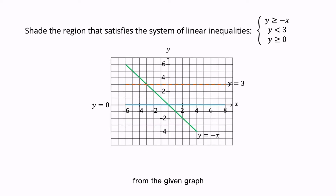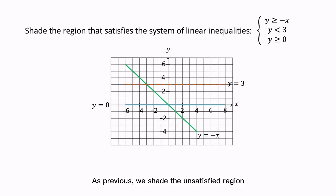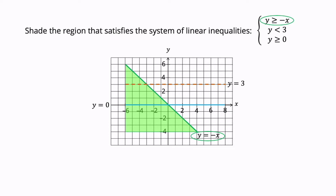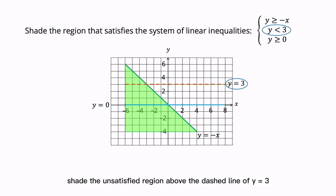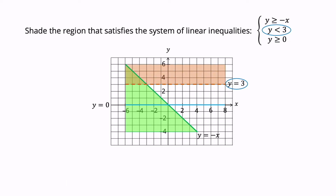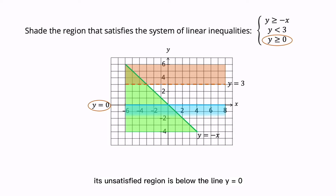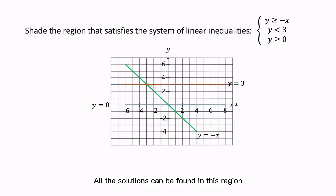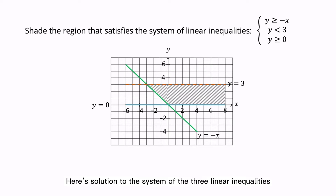Once again, from the given graph, shade the region that satisfies the system of linear inequalities. We shade the unsatisfied region. For the inequality Y greater than or equals to minus X, shade the unsatisfied region below the solid line of Y equals to minus X. For the inequality Y less than 3, shade the unsatisfied region above the dashed line of Y equals to 3. For the inequality Y greater than or equals to 0, the unsatisfied region is below the line Y equals to 0. The unshaded region is the solution set for the three linear inequalities.